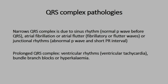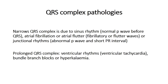Now we'll touch on some different morphologies of the QRS complex. A narrow QRS complex — less than 0.1 seconds — indicates that the stimulus originates from above the ventricles, in the atria. If a normal-looking P wave precedes it, that indicates the sinus node is the main driver of the QRS complex.